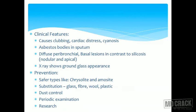Clinical features of asbestosis include clubbing, cyanosis, and cardiac distress. There are asbestos bodies found in sputum. Asbestos bodies are the amphibole fibers surrounded by macrophages and fibrinous material — the macrophages cover the fiber completely and the whole thing comes out. Microscopically the fiber can be seen with many macrophages surrounding it with some fibrinous material — that is the asbestos body.